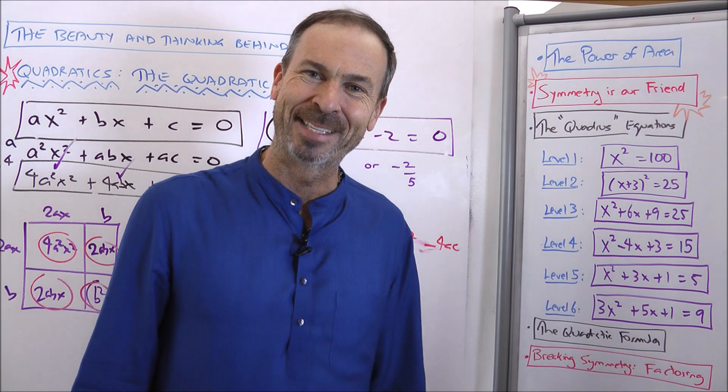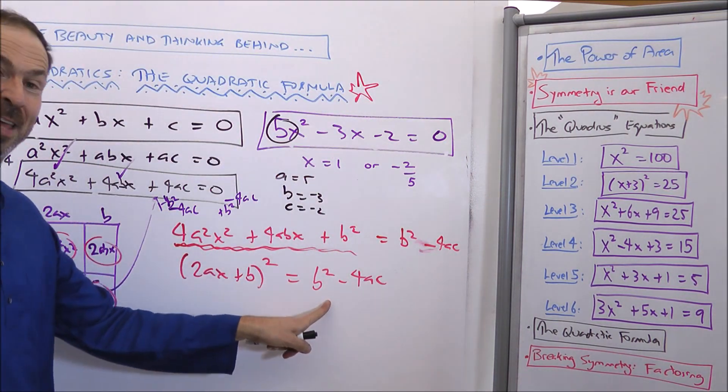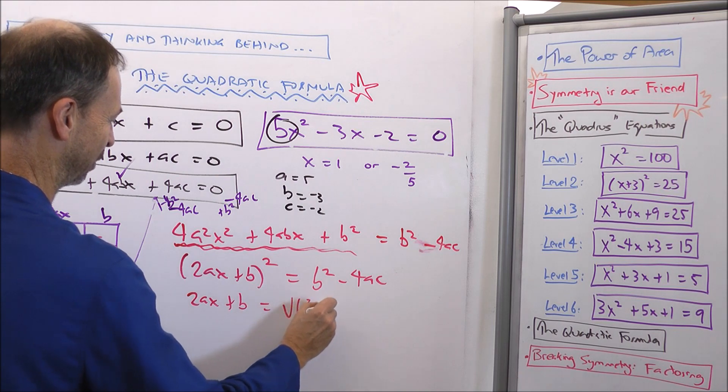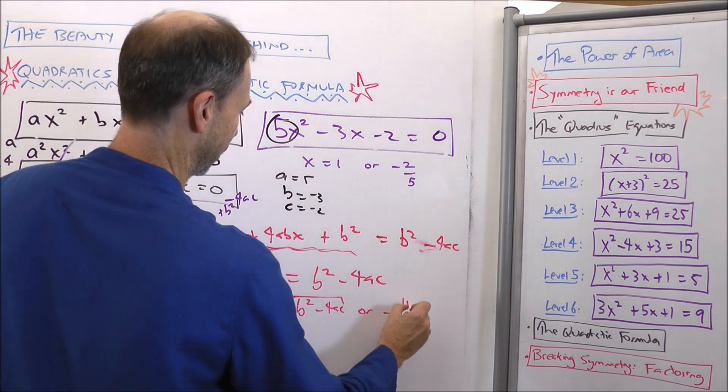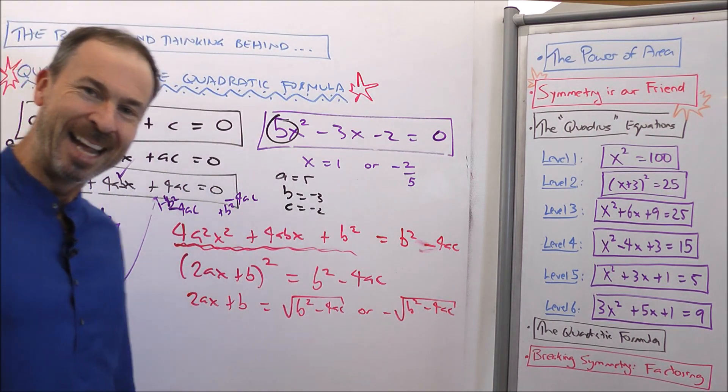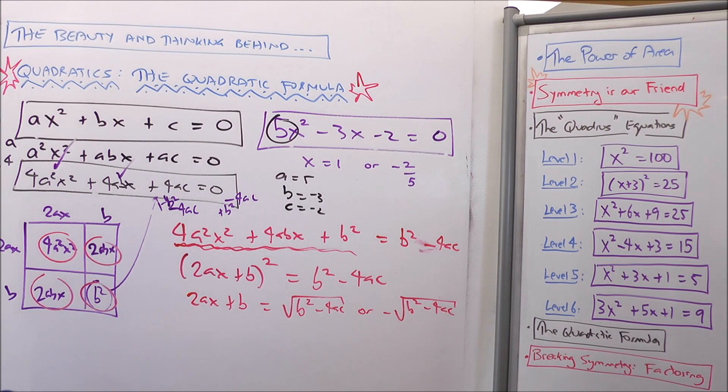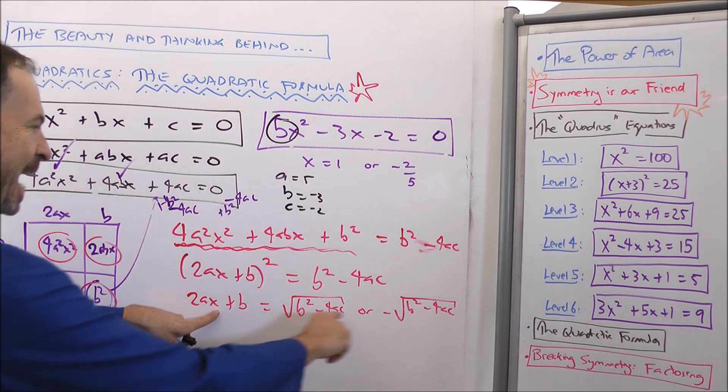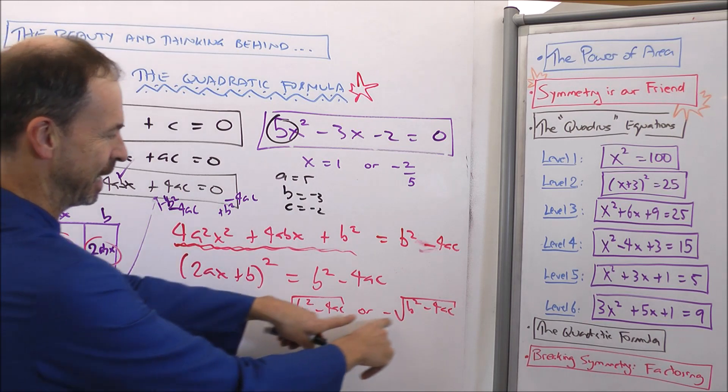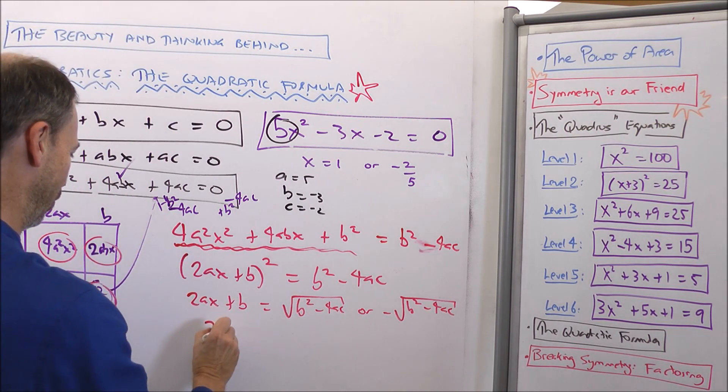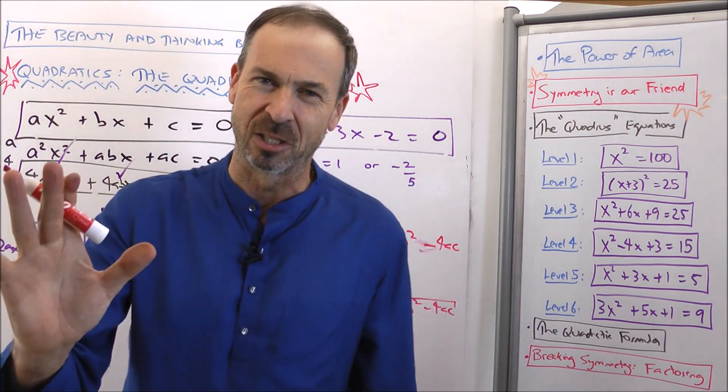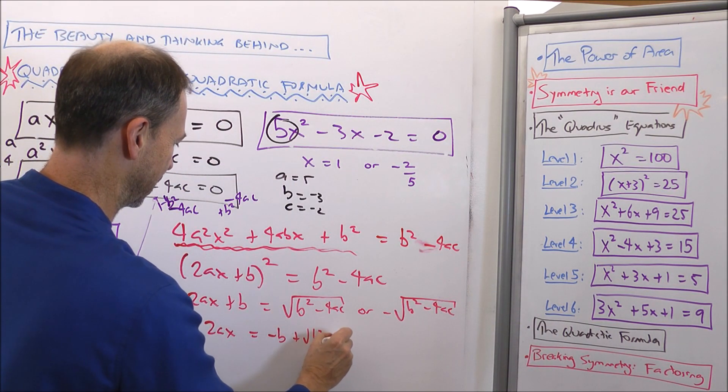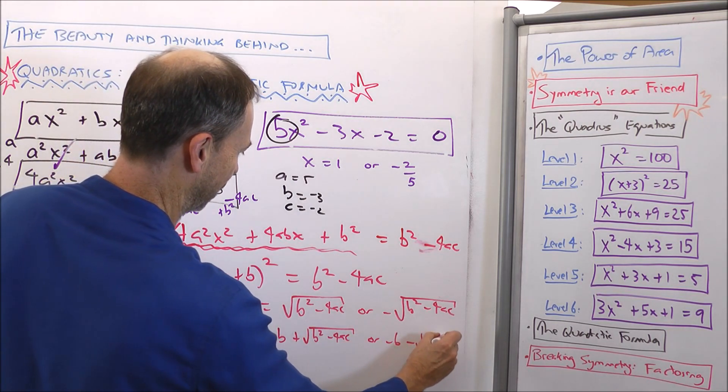But let me keep going. Why do I do all this work? Because that is precisely all the parts that make up a square. Which square? This square. 2ax plus b by 2ax plus b. So this is telling me 2ax plus b as a square is b squared minus 4ac. Something squared is b squared minus 4ac. Oh, so my something better be the square root of that or the negative version of that square root. So let me write that down. 2ax plus b must be the square root of b squared minus 4ac or the negative version of the b squared minus 4ac.